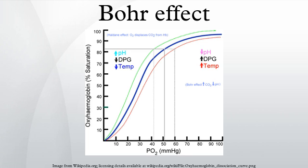Conversely, in the lungs, where oxygen concentration is high, binding of oxygen causes hemoglobin to release protons, which combine with bicarbonate to drive off carbon dioxide in exhalation. Since these two reactions are closely matched, there is little change in blood pH. The dissociation curve shifts to the right when carbon dioxide or hydrogen ion concentration is increased, which facilitates increased oxygen dumping. This mechanism allows the body to adapt to the problem of supplying more oxygen to tissues that need it most.